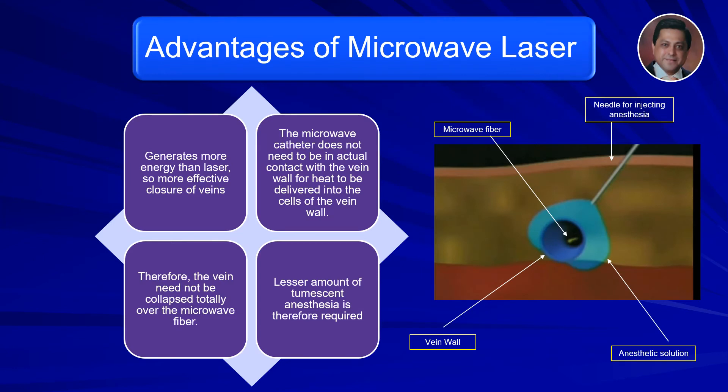What are the advantages of microwave over laser? First of all, it generates more energy than laser, so there is more effective closure of the veins. The microwave catheter does not need to be in actual contact with the vein wall for heat to be delivered into the cells of the vein wall.